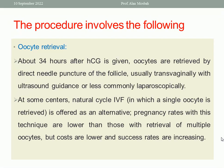In a natural cycle, without ovarian stimulation, a single oocyte is used. However, the pregnancy rate with this technique is lower, though the complications of ovarian hyperstimulation syndrome and multiple pregnancy are much lower than with ovarian stimulation.